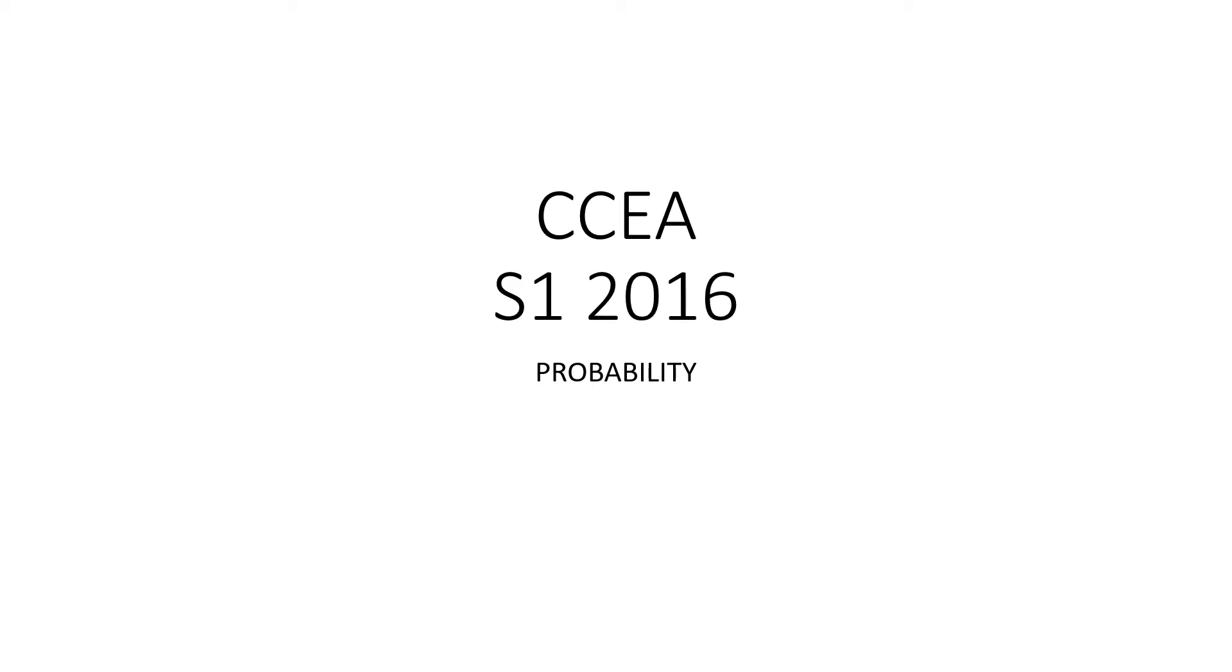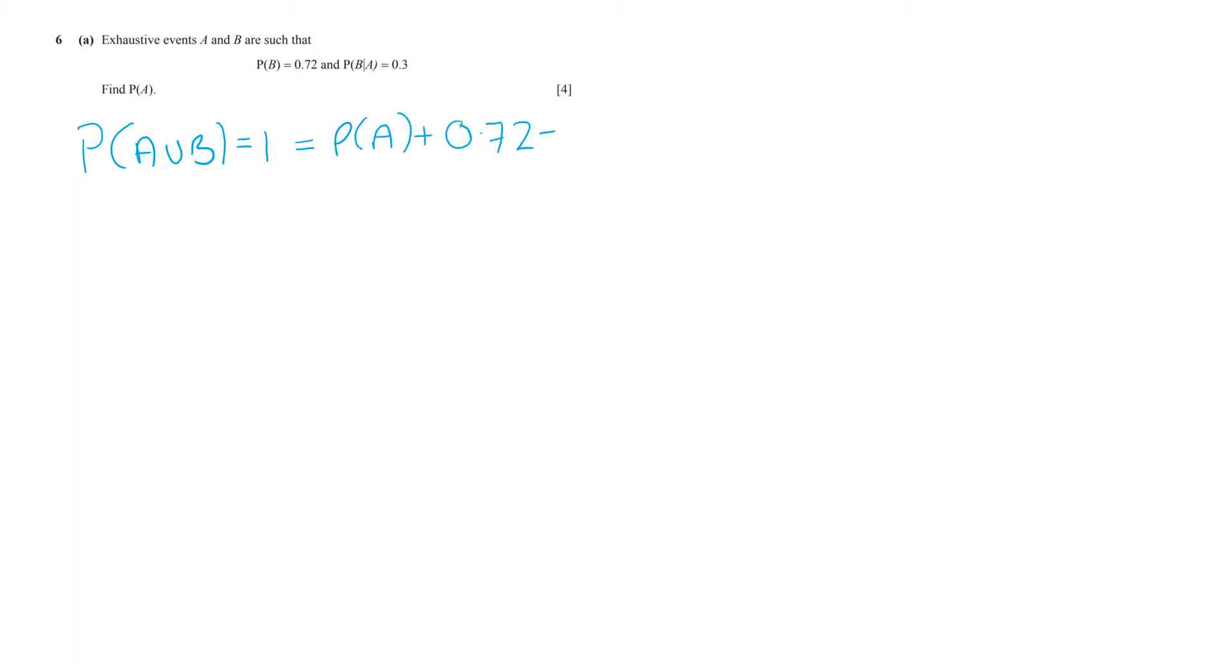CA S1 probability. Exhaustive events means that the probability of A or B happening is one, but we also know that is the probability of A plus the probability of B minus the probability of A and B.